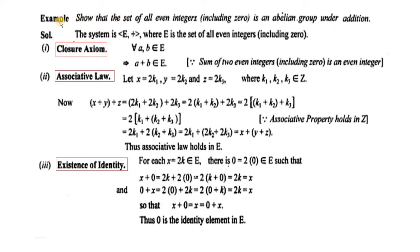Bismillahirrahmanirrahim. Here we have an example to show that the set of all even integers including 0 is an abelian group under addition. E represents the set of even integers having element 0, and this represents the binary operation addition. We have to check that the algebraic structure E together with addition is an abelian group.